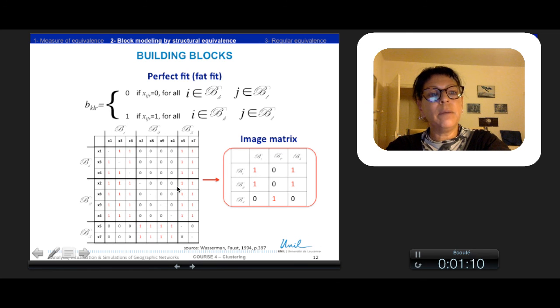The perfect fit block model occurs if all actors in each position are structurally equivalent. It is 0 for all 0 relations if all the relation of the block is 0, and 1 if all the relation of the block is 1. This ideal situation results in the permitted sociomatrix filled with all 1 or all 0.